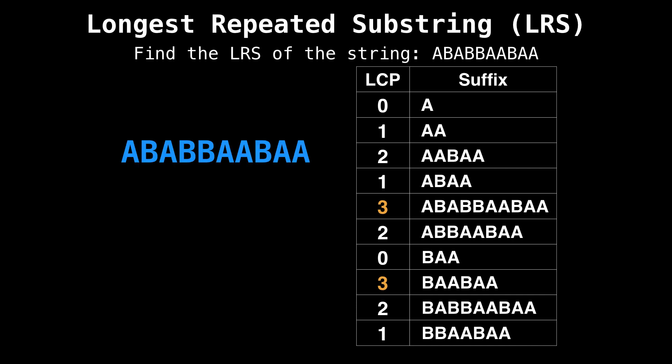For the first maximum, you can see that we'll want the first three characters from the suffix "ABABBAABAA". And for the second maximum, we'll want the first three characters from the suffix "BAABAA". Visually, for this first longest repeated substring, we have "ABA", which appears at the start and then "ABA" again closer to the end.